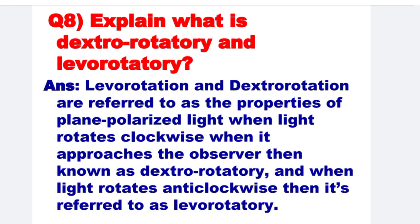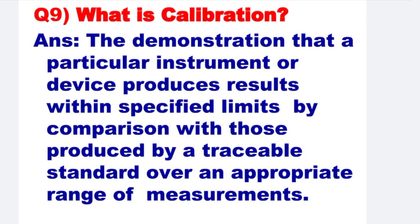Next: Explain what is dextrorotatory and levorotatory? Levorotation and dextrorotation refer to the properties of plane polarized light. When light rotates clockwise as it approaches the observer, it is known as dextrorotatory. And when light rotates anticlockwise, it is referred to as levorotatory.